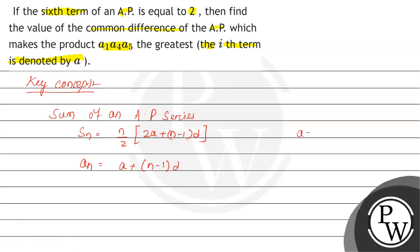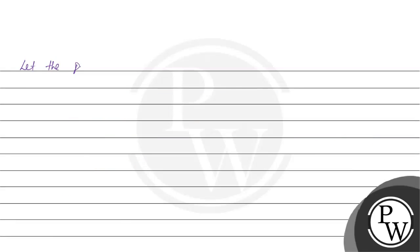So here the 6th term is 2. We can write A6 equals 2, and A6 as A plus 5D equals 2. That implies A equals 2 minus 5D.